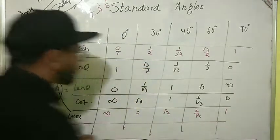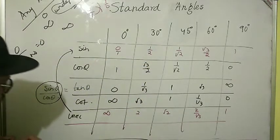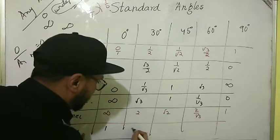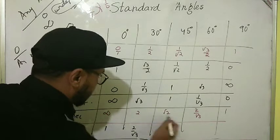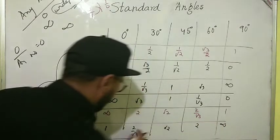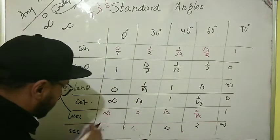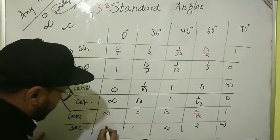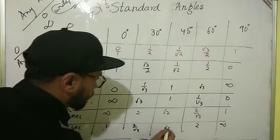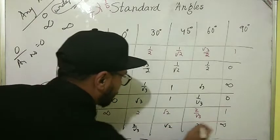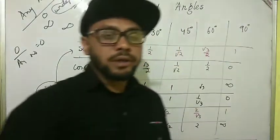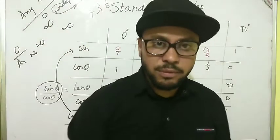For sec, it is the reciprocal of cos, so the values are opposite to cosine: sec 0° = 1, sec 30° = 2/√3, sec 45° = √2, sec 60° = 2, sec 90° = undefined.